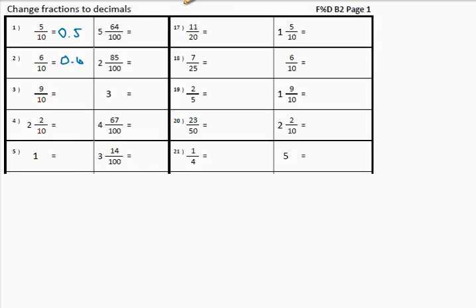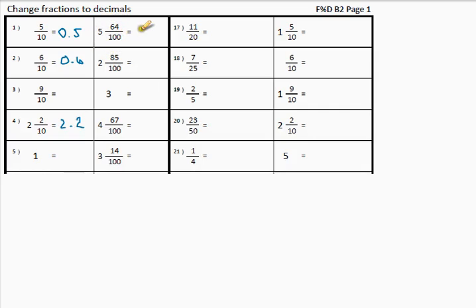If you want to pause the video and try this now, you can. In the meantime, let's look at this one. What is the whole number? The whole number in this case is not 0 — it is 2. So it is going to be 2 point, and then after the point it would be a 2. Now let's look at this one. The whole number is 5. What will be after the point? 64, because it is 100 at the bottom.